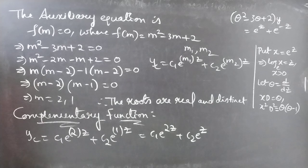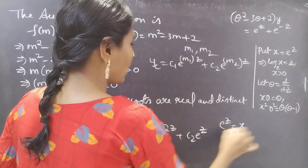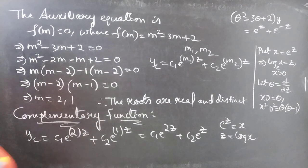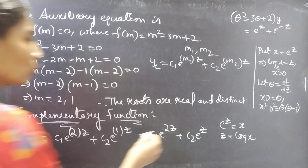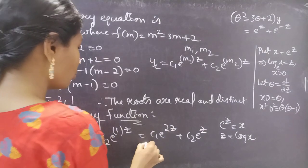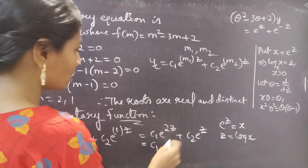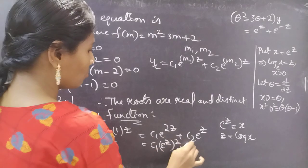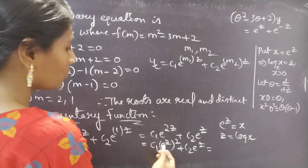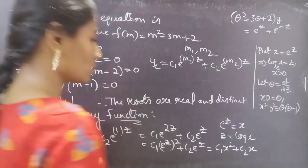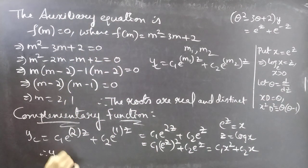Now we have yc in terms of z, but we need to write it in terms of x by replacing e to the power z by x. We write e to the power 2z as (e to the power z) squared plus c2 times e to the power z, then replace e to the power z by x to get c1 x squared plus c2 x. Therefore yc equals c1 x squared plus c2 x.